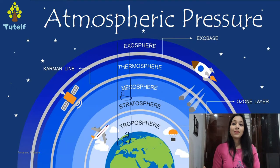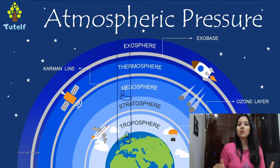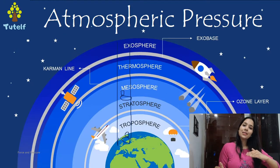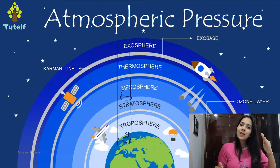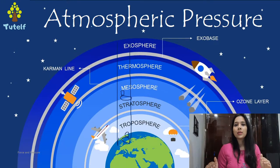That's why we say that at sea level, maximum atmospheric pressure is more as compared to above. As we go up, our atmospheric pressure is less.